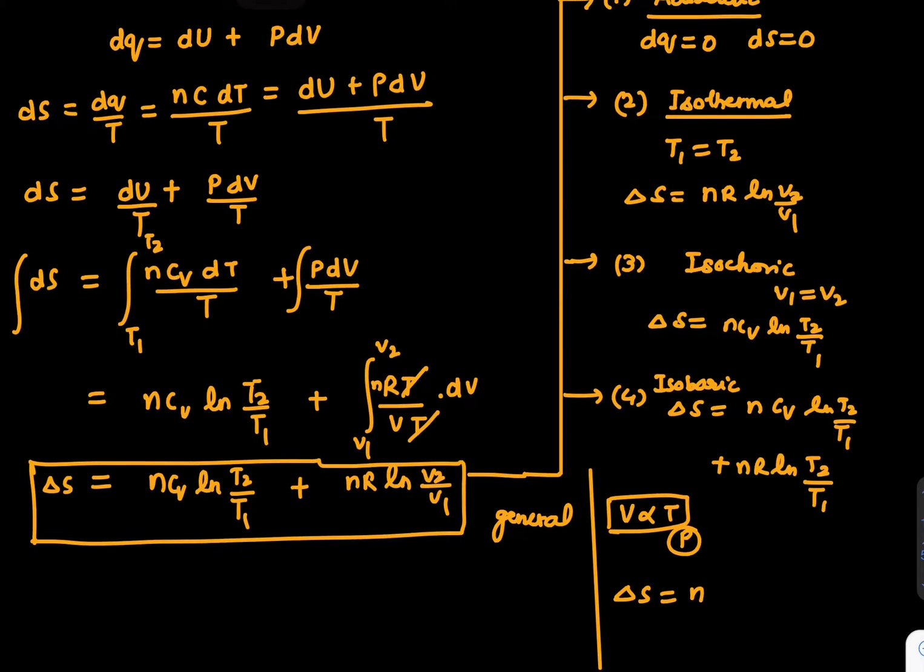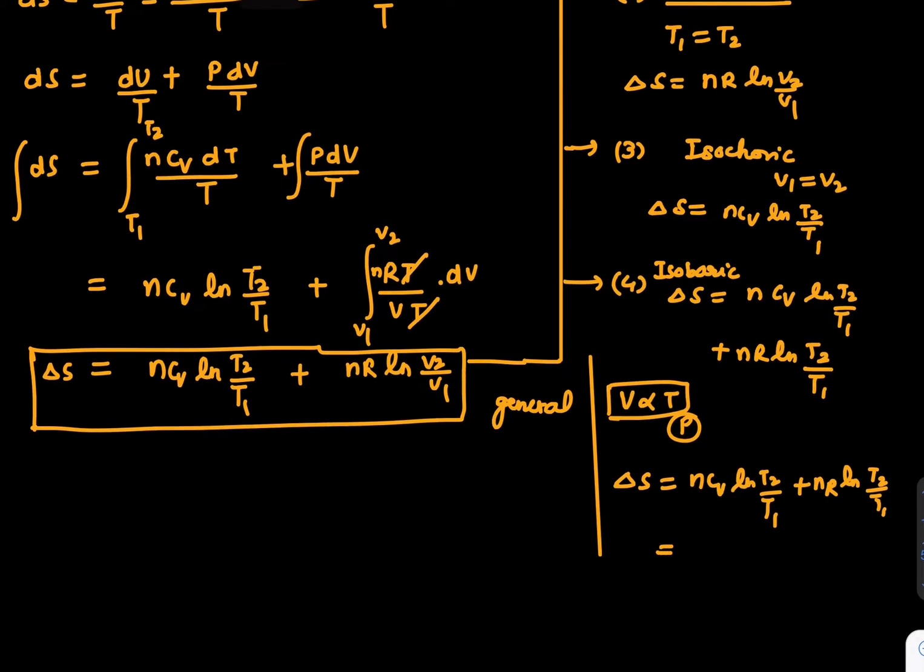What is Cv + R? It's Cp. So ΔS = nCp ln(T2/T1), which is given in the question directly. This is the complete derivation we have discussed. Though we can solve directly using this formula, I wanted to discuss this in detail.